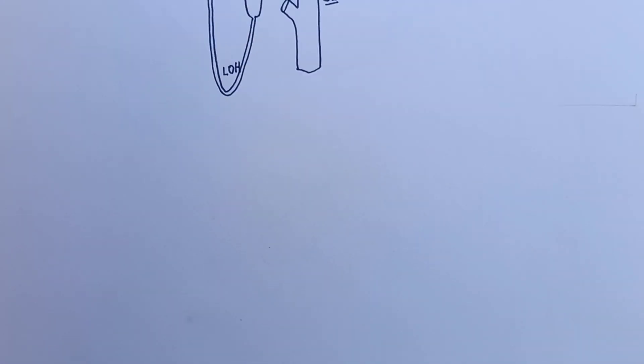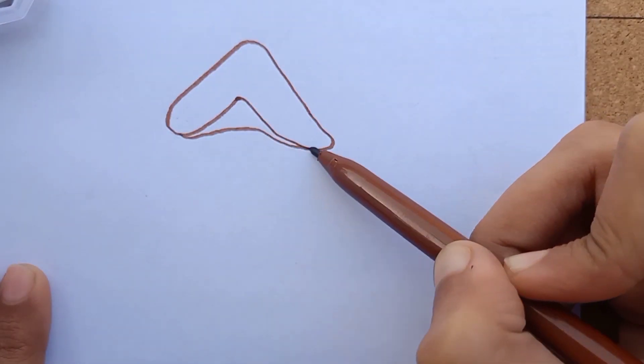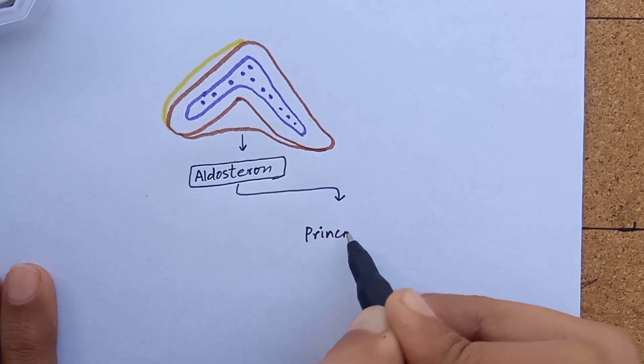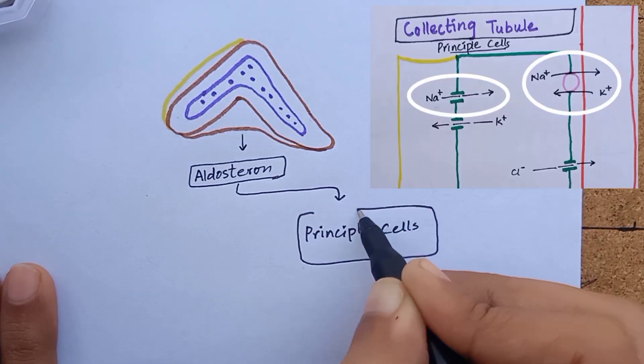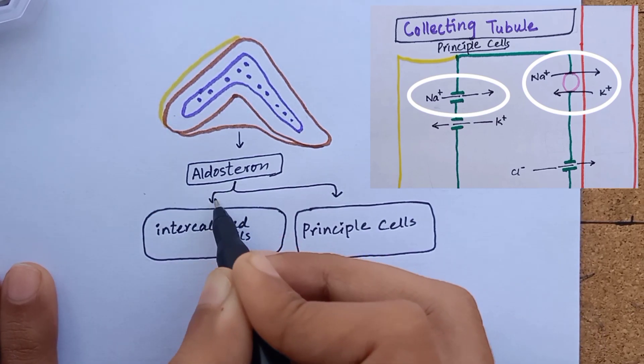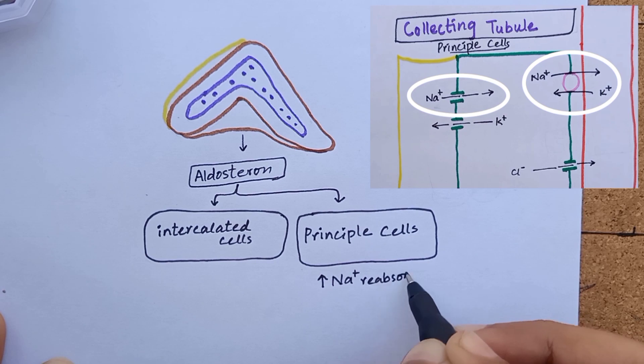Aldosterone is secreted by zona glomerulosa cells of adrenal cortex and it acts on renal collecting tubule. On principal cells, it acts by activating sodium-potassium ATPase on basal membrane and increasing sodium permeability on luminal cell membrane.